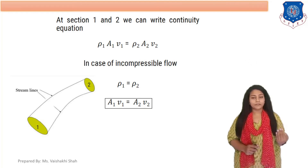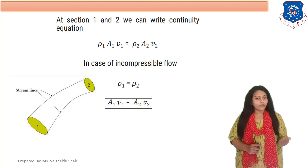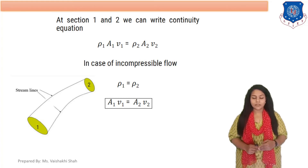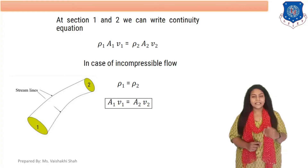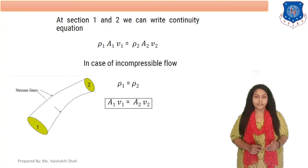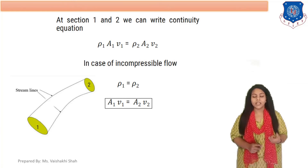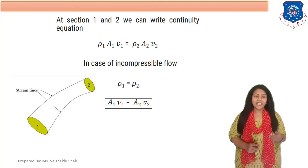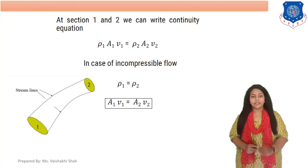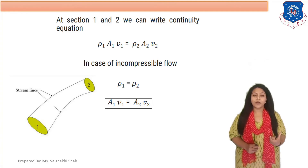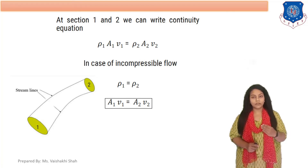If the fluid is the same throughout the streamlines, then ρ₁ equals ρ₂ because the fluid is the same and so its density is also the same. In that case, the equation simplifies to A₁V₁ = A₂V₂. This is the final form of the continuity equation: area into velocity at Section 1 equals area into velocity at Section 2.